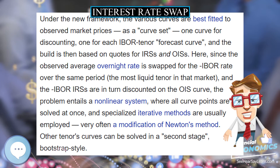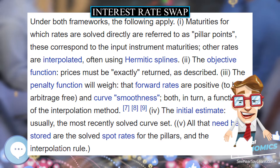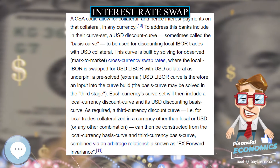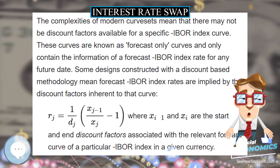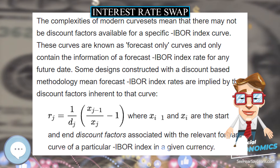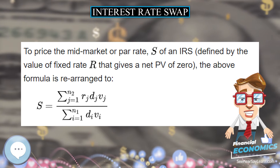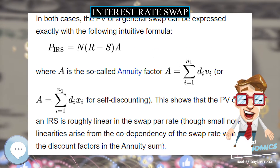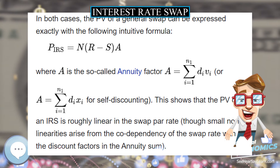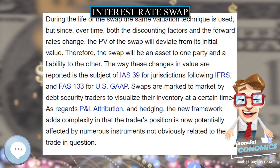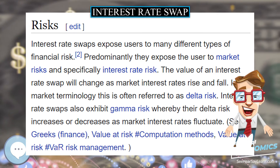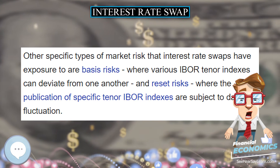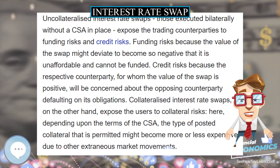Interest rate swaps expose users to many different types of financial risk. Predominantly they expose the user to market risks and specifically interest rate risk. The value of an interest rate swap will change as market interest rates rise and fall — in market terminology this is often referred to as delta risk. Interest rate swaps also exhibit gamma risk whereby their delta risk increases or decreases as market interest rates fluctuate. Other specific types of market risk that interest rate swaps have exposure to are basis risks, where various IBOR tenor indexes can deviate from one another, and reset risks, where the publication of specific tenor IBOR indexes are subject to daily fluctuation.